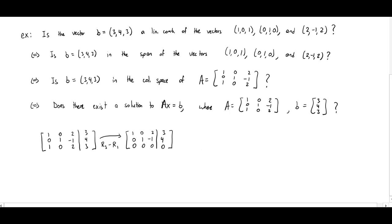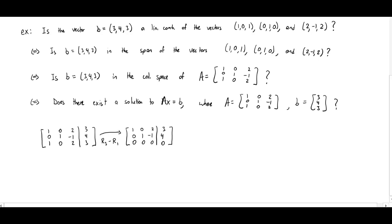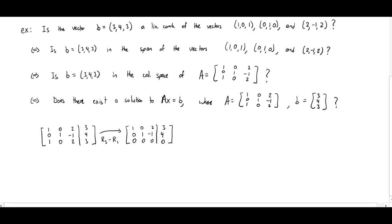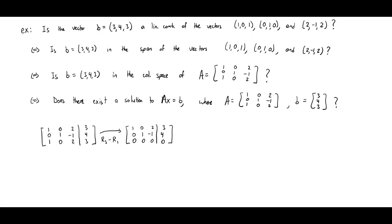When we reduce the matrix, we end up in upper triangular form. The bottom row is 0 equals 0, so there should be infinitely many solutions. Remember, to have no solution you should have something like 0 equals 1 or 0 equals something non-zero. Since we don't have that, we have at least one solution.